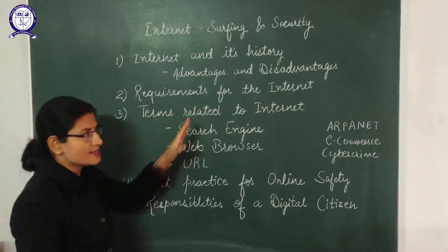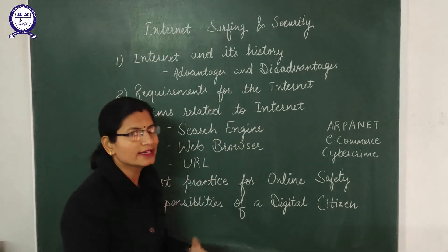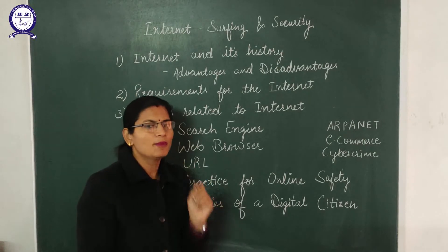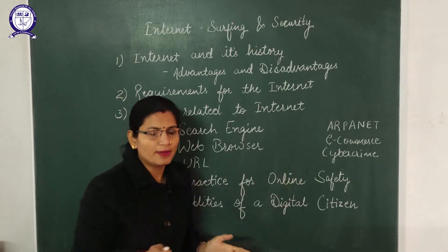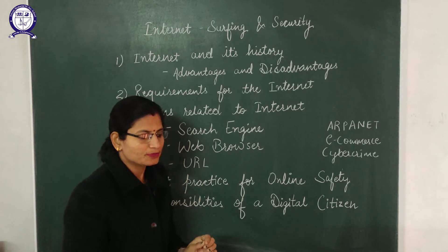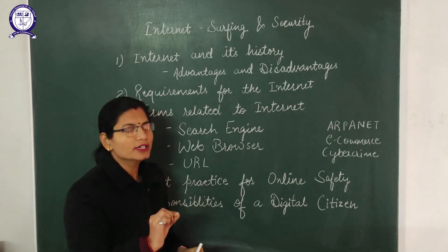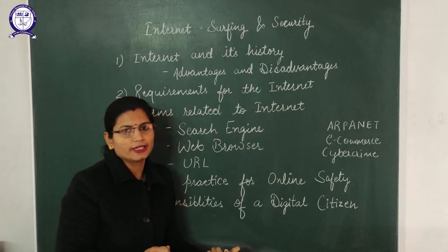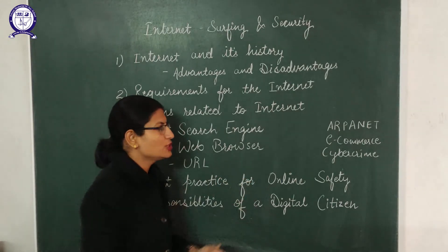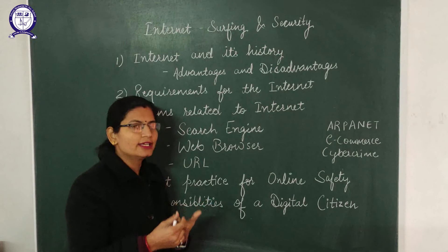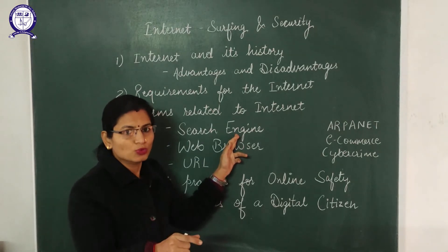Whenever we are surfing over internet, there are some terms we come across. First is a search engine. A search engine is a program or software which we use to search through a collection of web pages for particular information. Whenever you enter a keyword into your Google page, you get a list of pages accordingly. The results are generated using a program called a spider — a program used by the search engine to generate the web pages required by you.